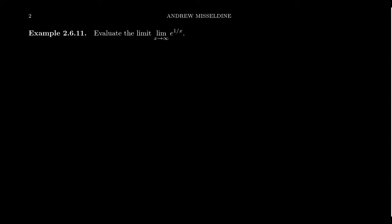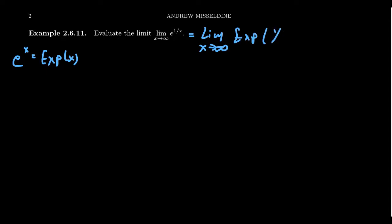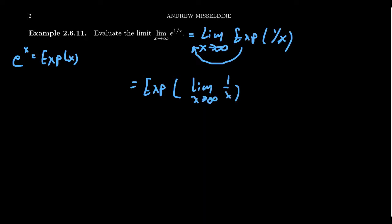Now let's consider a function that's not necessarily rational: f of x equals e to the 1 over x. We denote the exponential as exp for clarity, rewriting this as the limit as x approaches infinity of exp of 1 over x. Since the natural exponential is a continuous function, we can bring it outside the limit, giving exp of the limit as x approaches infinity of 1 over x. As x approaches infinity, 1 over x goes to 0, so we get exp of 0.